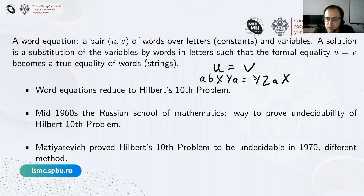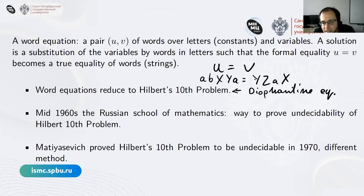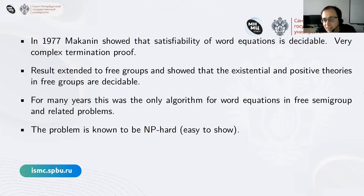It was known quite early that this problem reduces to Hilbert's 10th problem, where you are given Diophantine equations. The idea, developed in Russia in the 1960s, was that in order to show Hilbert's 10th problem is undecidable, one would first show undecidability of word equations, which are somehow simpler. However, it turns out that the satisfiability of word equations is actually decidable, as shown by Makanin in 1977.